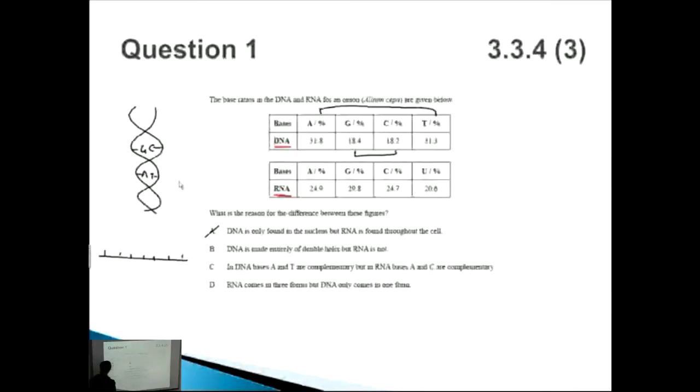And there's no other - if it was double-stranded it would look like this, but it's not. So you'd have your bases along here like that. So B could be right. How about C? In DNA bases A and T are complementary but in RNA bases A and C are not complementary. So A and T, true, that is complementary, but bases A and C, they're never complementary, so this is completely wrong.